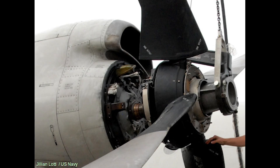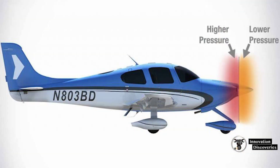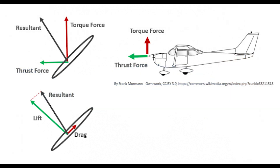Propellers work based on the principles of aerodynamics. As the blades rotate, they generate lift and thrust. The shape of the blades is crucial for this process. Propeller blades are typically designed with an airfoil shape, similar to an airplane wing. This shape allows the blades to create a pressure difference between the front and rear surfaces, generating lift. As the blades spin, they create a high-pressure area in front of them and a low-pressure area behind them, pushing the aircraft forward.